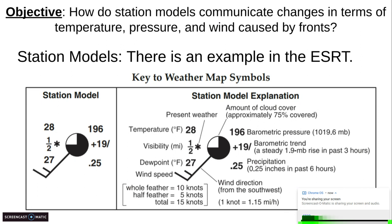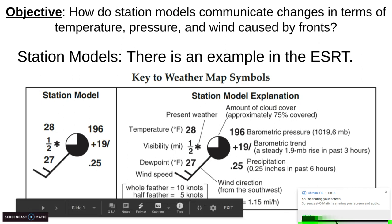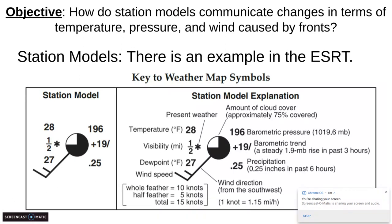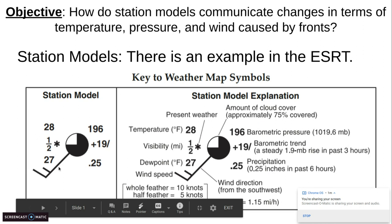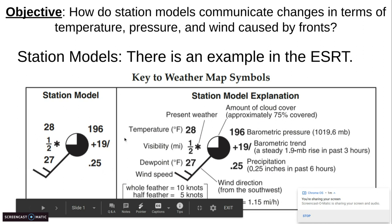So the objective that you're focusing on today and this week is how do station models communicate changes in terms of temperature, pressure, and wind caused by fronts, keeping in mind that we're still thinking about weather change. So when I say station model, I'm referring to this image below, this image right here. Scientists have come up with these models as a way to communicate multiple pieces of weather data in an easy to read visual manner. This on the left, this image is how a station model would appear on a weather map. The image on the right, by the way, this is found in your earth science reference table, shows you what every value represents.